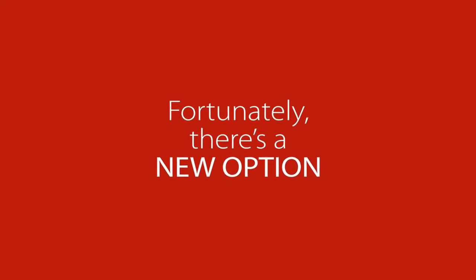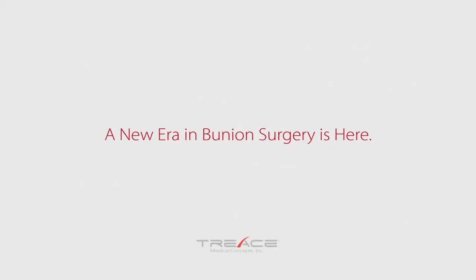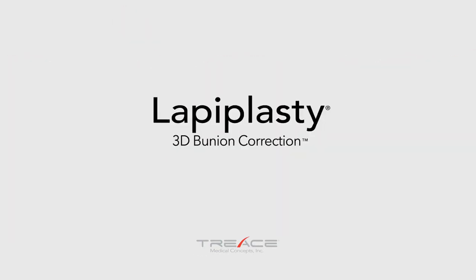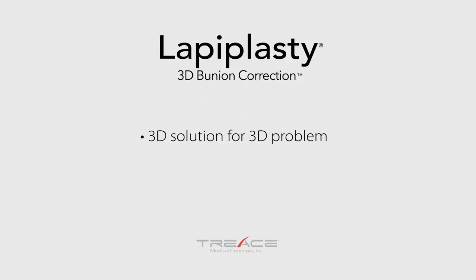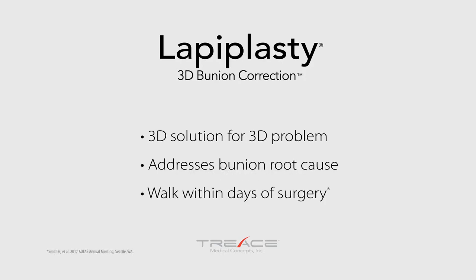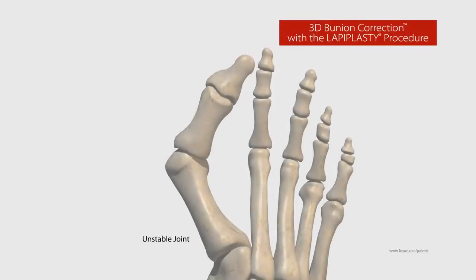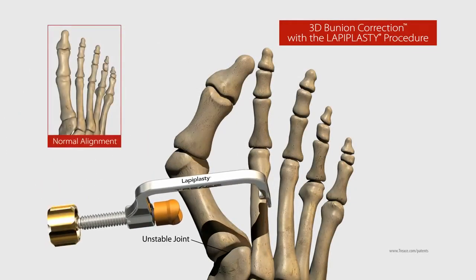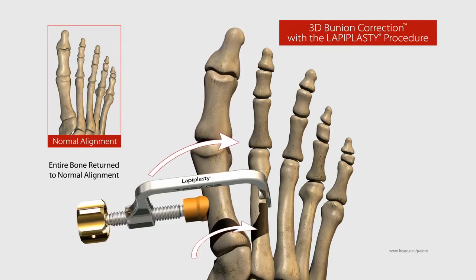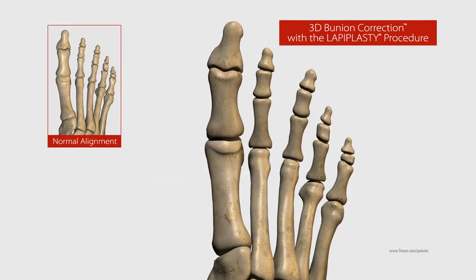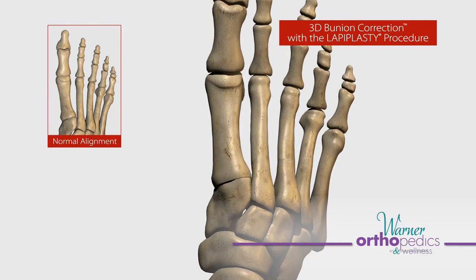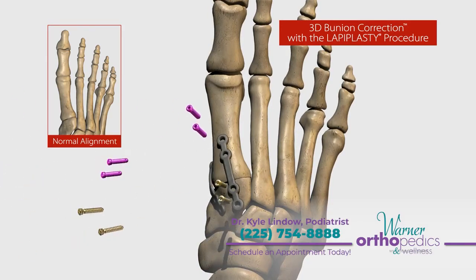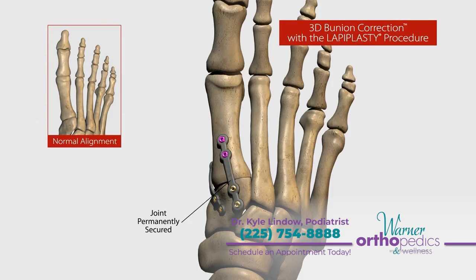Fortunately, there's a new option. A group of leading foot and ankle surgeons developed a patented approach called the Lapoplasty 3D bunion correction procedure. It precisely corrects the full 3D bunion deformity at the root of the problem, while allowing you to walk within days of surgery without casts. Using advanced instrumentation, the entire metatarsal bone is corrected in all three dimensions, restoring it to its proper alignment while naturally removing the bump and straightening your toe. To permanently secure the unstable joint, your surgeon applies innovative titanium plate technology, published in the Journal of Foot and Ankle Surgery.